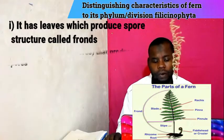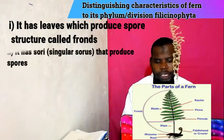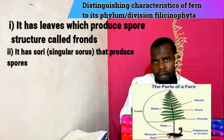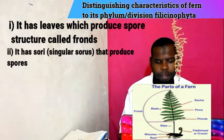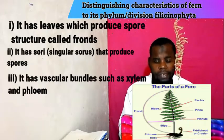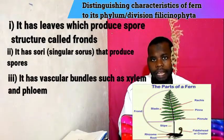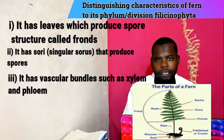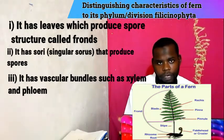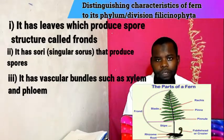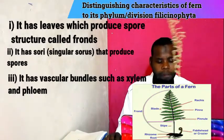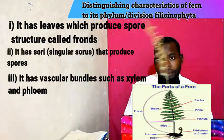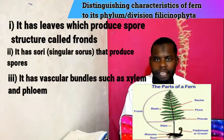The second distinguishing characteristic: it has a sorus, or sori in plural, that also produces spores. Number three: it has vascular bundles such as xylem and phloem. It has phloem and xylem — the xylem transports water and the phloem transports nutrients. That is the third reason why it belongs to division Filicnophyta.